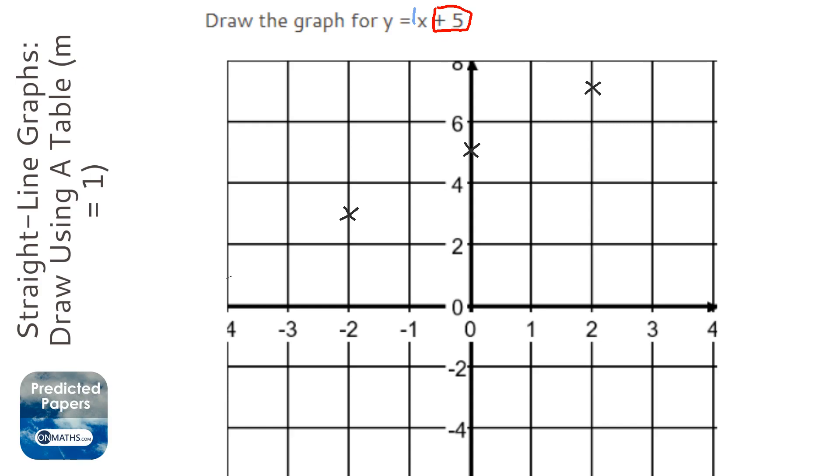I think it's going to start here and go up here, and make sure it goes for the full duration of the graph, because if it doesn't then you don't get full marks. And lastly, I'm just going to label it y = x + 5.